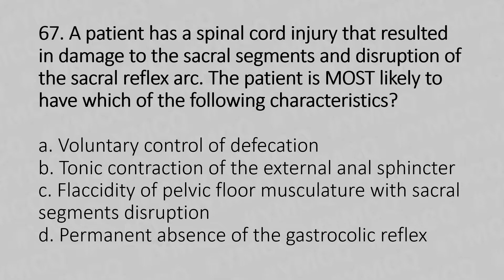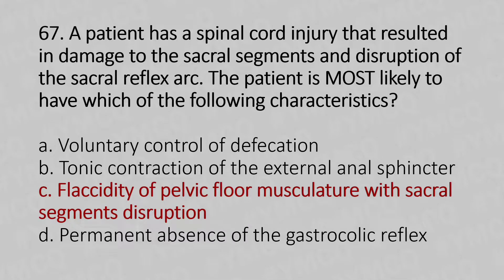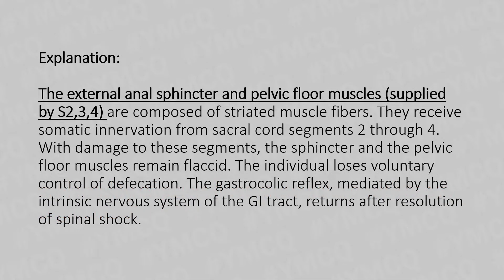And the answer is Option C: flaccidity of pelvic floor musculature with sacral segment disruption. Explanation: The external anal sphincter and pelvic floor muscles supplied by S2, S3, and S4 are composed of striated muscle fibers. They receive somatic innervation from sacral cord segments 2 through 4. With damage to these segments, the sphincter and pelvic floor muscles remain flaccid, and the individual loses voluntary control of defecation. The gastrocolic reflex, mediated by the intrinsic nerve system of the GI tract, returns after resolution of spinal shock.